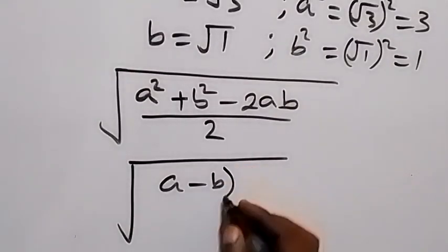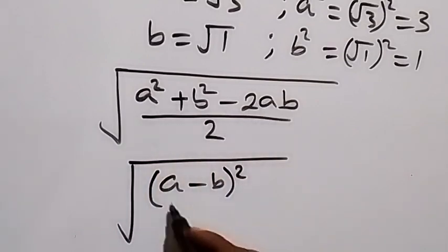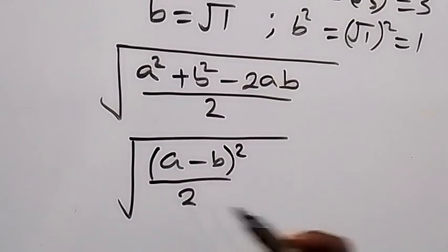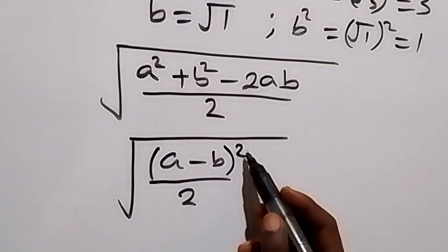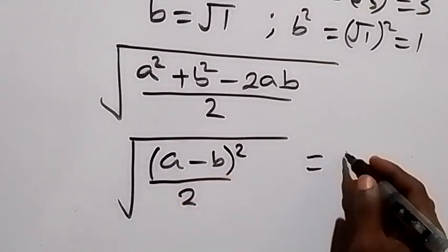All squared. So the expansion here gives us the same thing in the numerator, then divide by 2. And we can separate this into root 2. The root and the square cancel, one will be square root, so we have